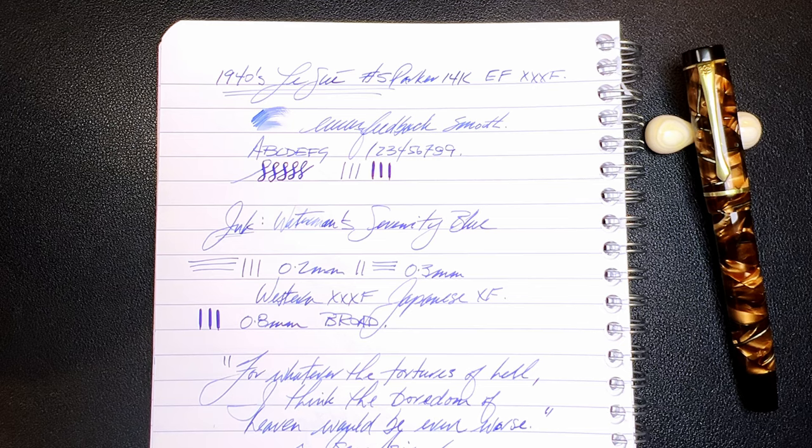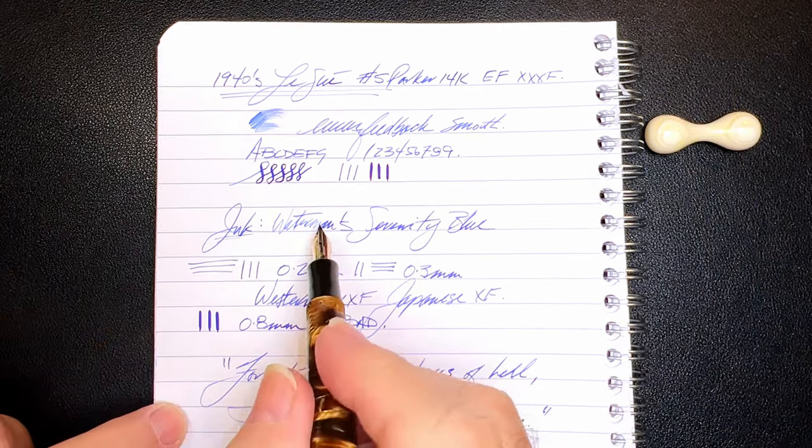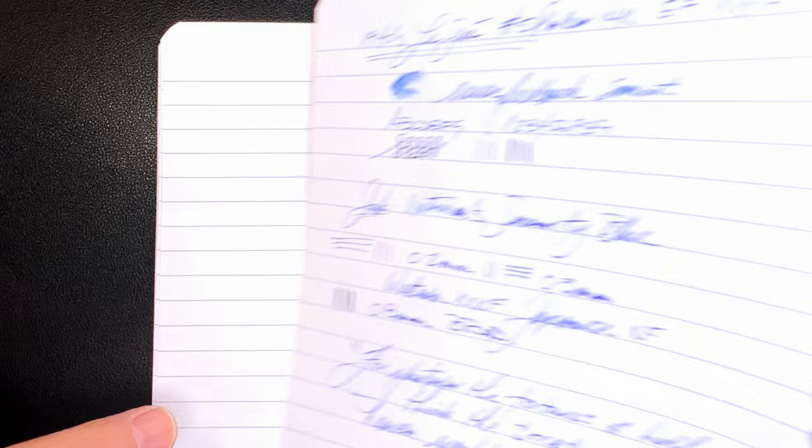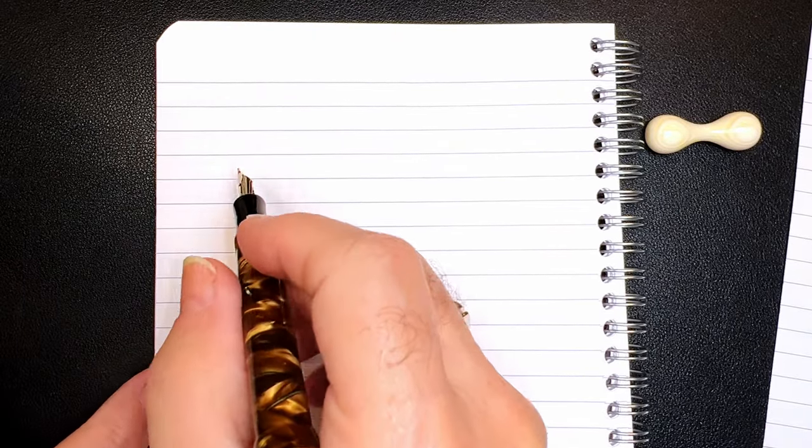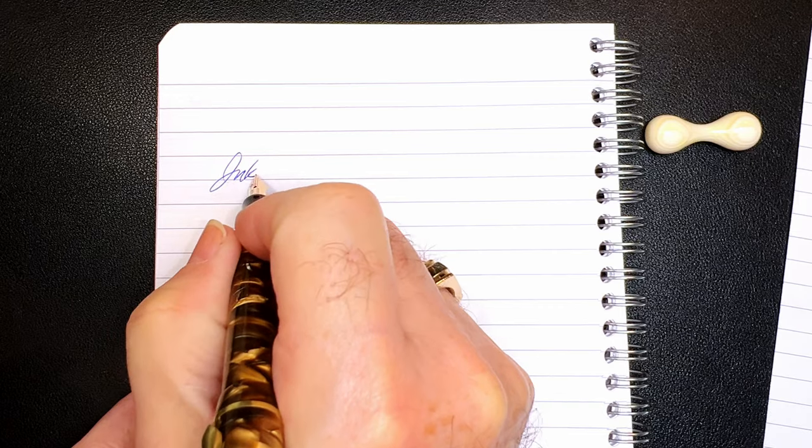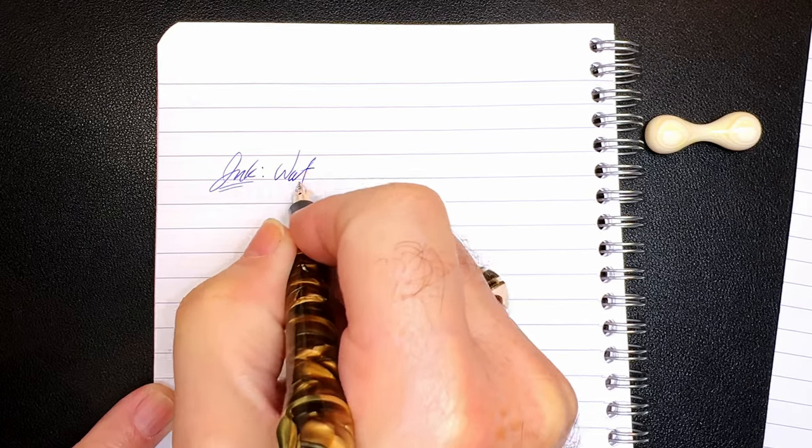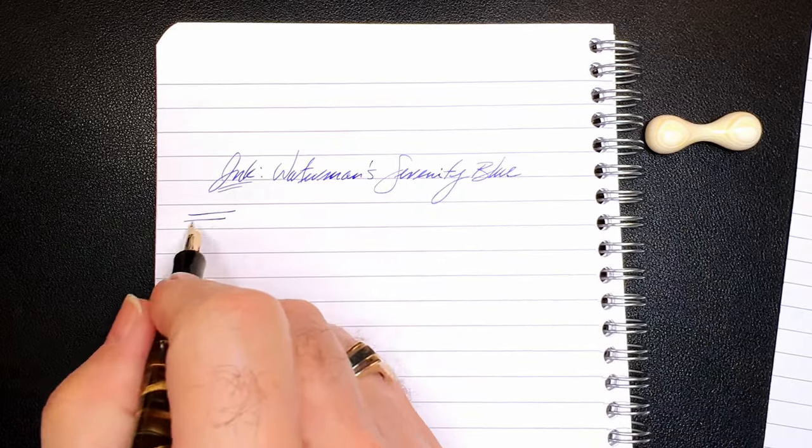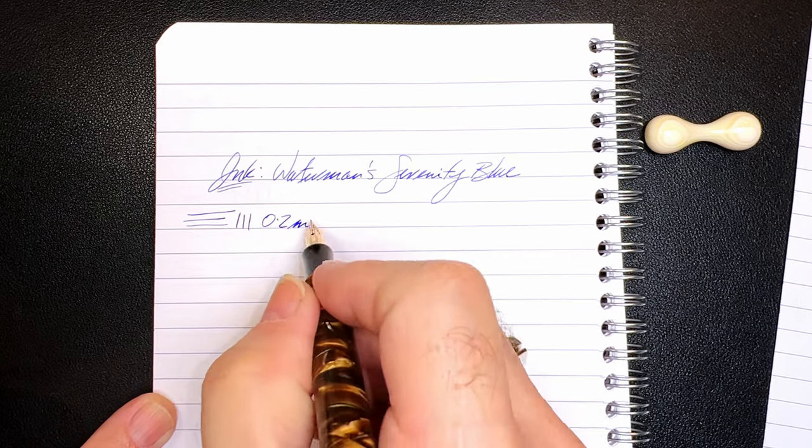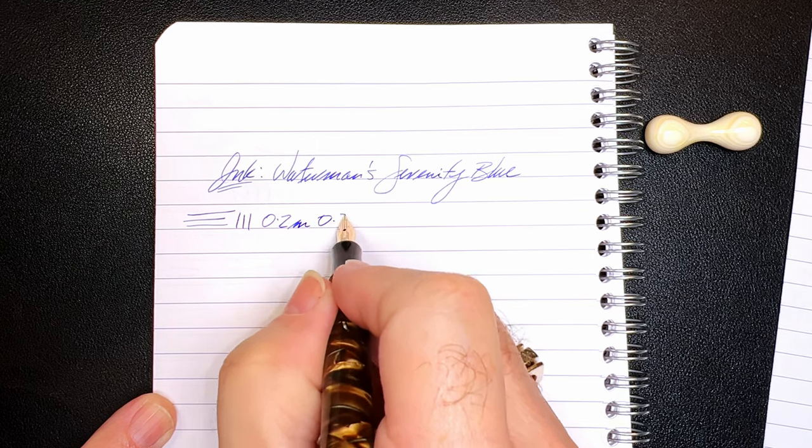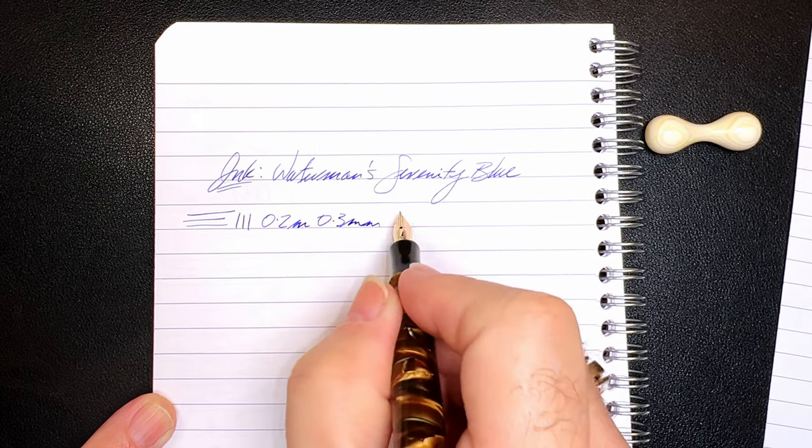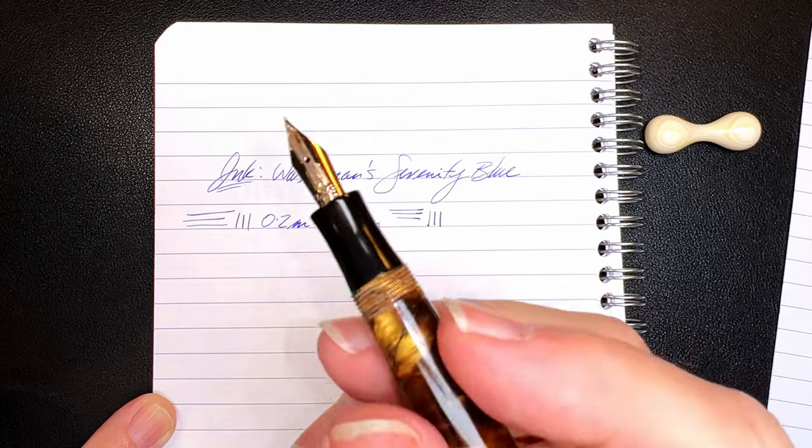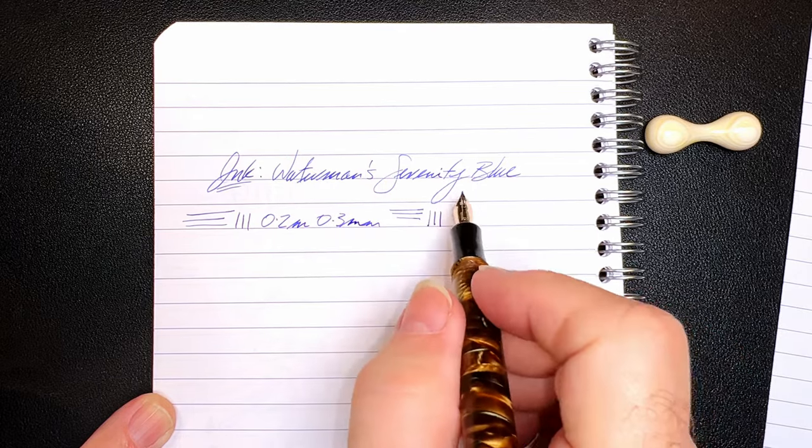I think the ghost of Shirley Cantrell is still haunting me because I no sooner wrote Waterman's that I ran out of ink. And I completed the rest of the writing sample without turning my recorder back on. So we're going to continue from that point on. Again, the ink is indeed Waterman's Serenity Blue. And the line this nib makes is a very thin 0.2 millimeters to 0.3 millimeters because it is slightly thicker on the horizontal than it is on the vertical.